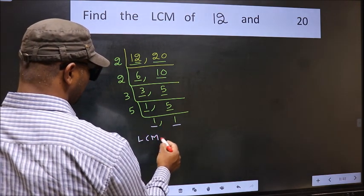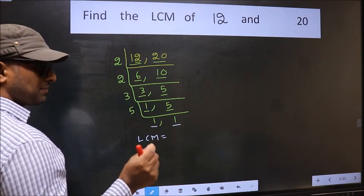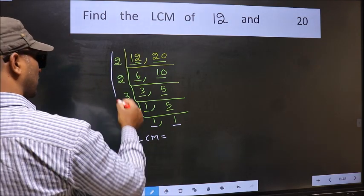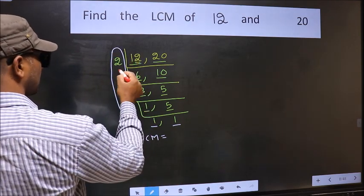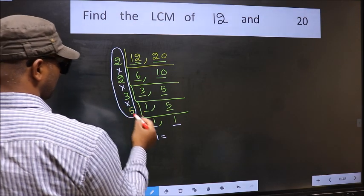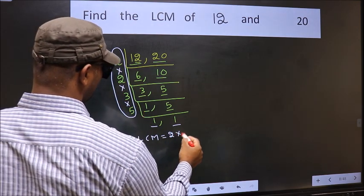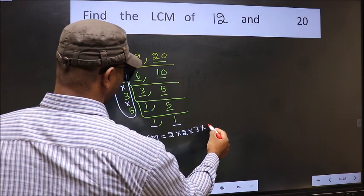So our LCM is the product of these numbers. That is 2 into 2 into 3 into 5.